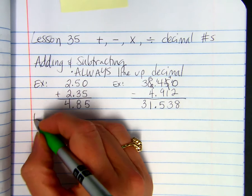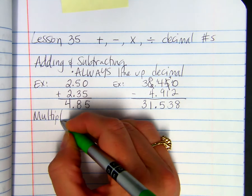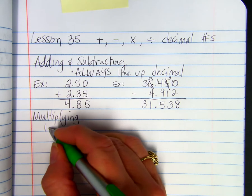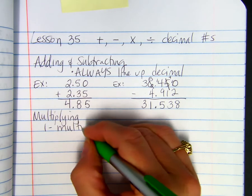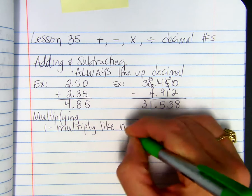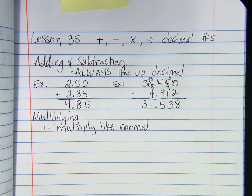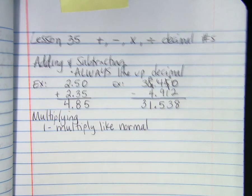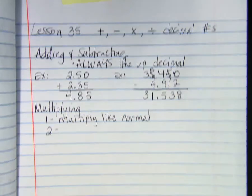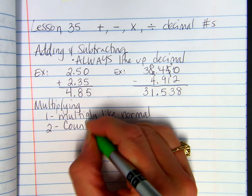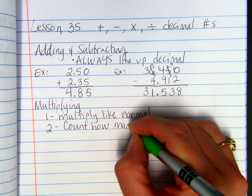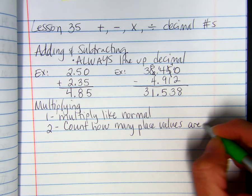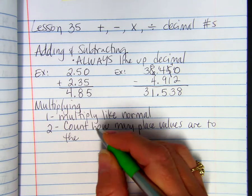When we are multiplying, there's a couple of steps that you want to do. The first one is, you multiply like normal. Just ignore the decimal points. Just how you would normally multiply two numbers, we just multiply them. Then, number two,